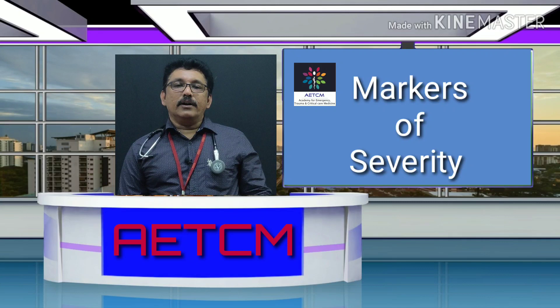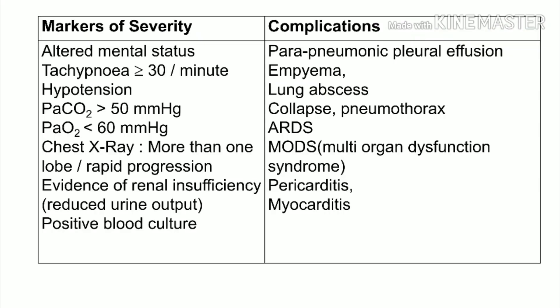Markers of severity: altered mental status, tachypnea more than 30 breaths per minute, hypotension, PCO2 more than 50 mmHg, PaO2 less than 60 mmHg, chest X-ray showing more than one lobe involvement or rapid progression, evidence of renal failure, and positive blood culture. These patients may require ICU admission.